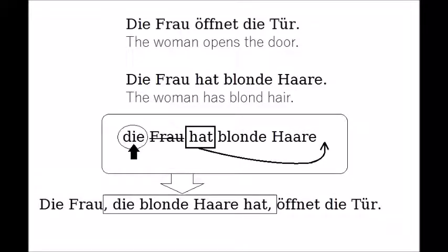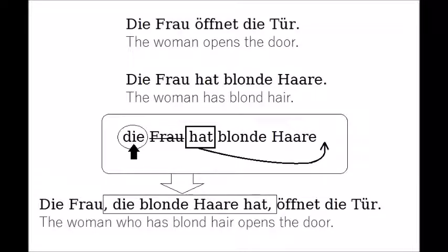'Die Frau, die blonde Haare hat, öffnet die Tür.' — 'The woman, who has blonde hair, opens the door.' To show that it is a subclause, like always, you need to put a comma before and after it. And that's all you need to do. Simple, right?